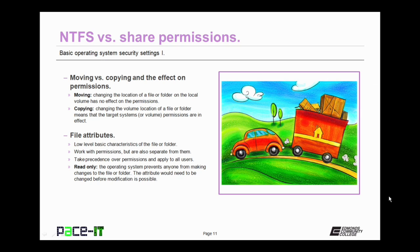Now let's talk about what happens to permissions when you move a file or when you copy it. When you move a file, you're just changing the location of a file or folder on the local volume, and that has no effect on the permissions associated with that file. When you copy a file or folder, you're actually changing its location to a new volume. When that happens, the permissions are now tied to the target system, the new volume, so whatever permissions are in effect on that volume get applied to the files and folders.